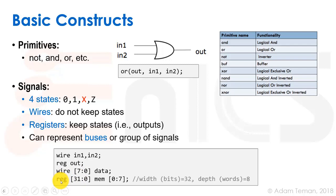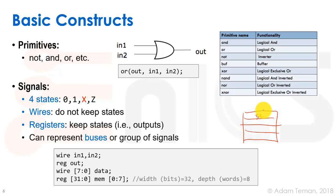You can do the same thing with reg. We can also make wires and regs two-dimensional with a notation where square brackets appear both before and after the signal name. For example, 'reg [31:0] mem [0:7]' declares 32-bit words with eight of them — a memory array of eight 32-bit words. In SystemVerilog you can do multi-dimensional arrays with even more dimensions.